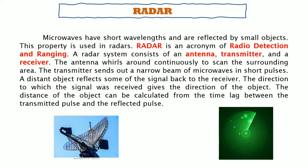In movies about submarines or warships, radar is used to locate nearby ships or incoming missiles. Similarly, aircraft use radar to detect foreign objects or other planes heading their way, allowing them to track whether an object is approaching or moving away from them.